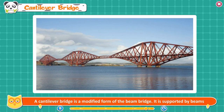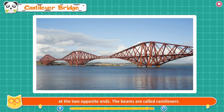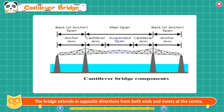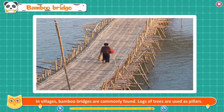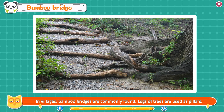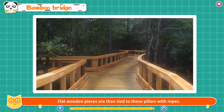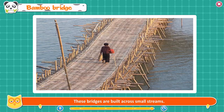Cantilever Bridge — a cantilever bridge is a modified form of the beam bridge. It is supported by beams called cantilevers at the two opposite ends. The bridge extends in opposite directions from both ends and meets at the center. Bamboo Bridge — in villages, bamboo bridges are commonly found. Logs of trees are used as pillars, and flat wooden pieces are then tied to these pillars with ropes. These bridges are built across small streams.